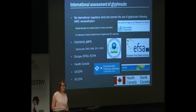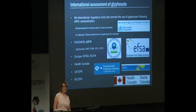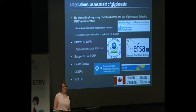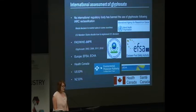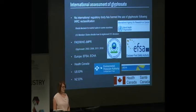Moving on to international assessments: it's been reported in the media that some countries have banned glyphosate, but no international regulatory body has done so following the IARC reclassification. In some countries there's been a retail decision to restrict or remove sale. In the EU, whilst the European Commission regulates the chemicals, it's up to member states to implement that — so they can make a decision not to authorise use in their country, but it's not actually a regulatory decision. The JMPR has assessed glyphosate a number of times, most recently earlier this year. It has also been assessed by EFSA, the European Chemicals Agency, Health Canada, the US EPA, and the New Zealand EPA.